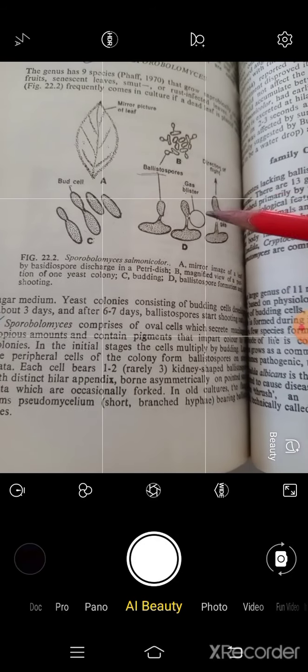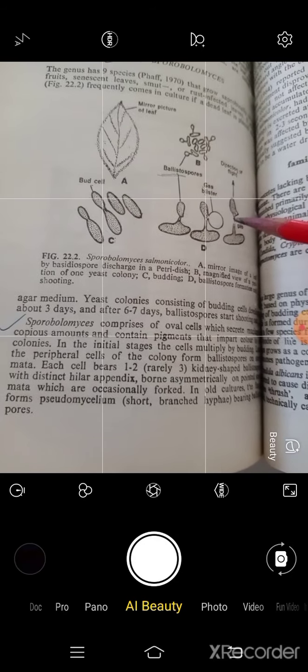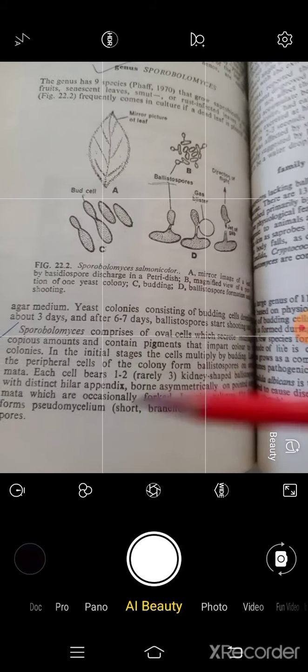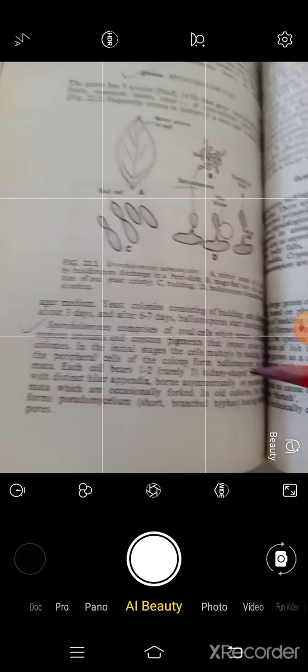These are the conidia, and usually they are kidney-shaped. And when culture is old, they form short branched hyphae bearing the various blastospores.